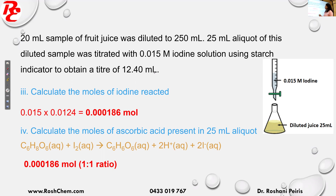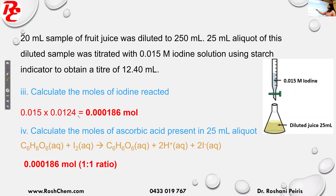Question: calculate the moles of iodine. N equals C times V. For iodine, I have both concentration and volume. The concentration is 0.015 M, times the volume — volume should be in liters. The volume of iodine is 12.4 ml, so 0.0124 L. This gives you the moles of iodine added to the diluted fruit juice solution.